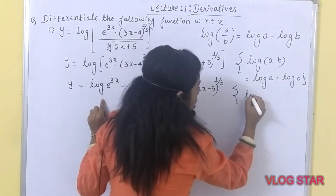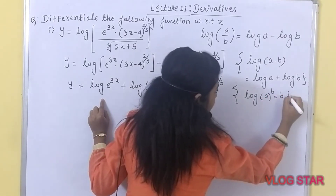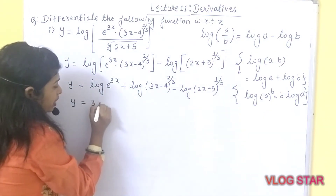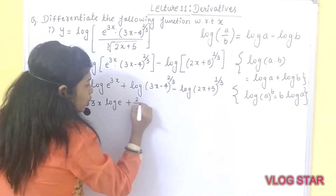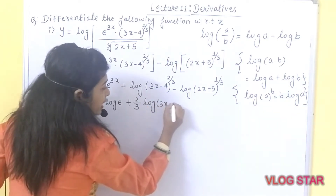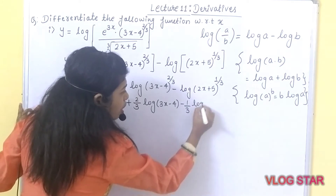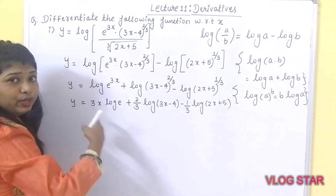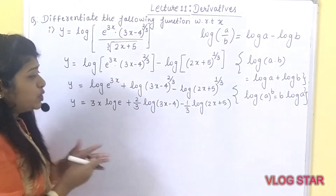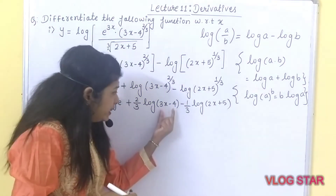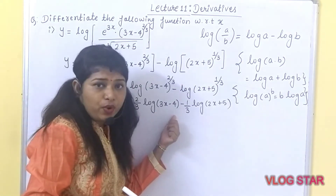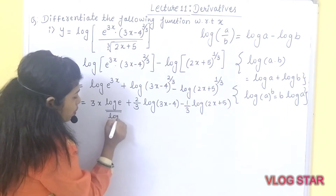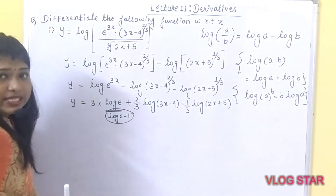You can also use the rule log of a raised to b can be given by b into log a. After applying that formula, the y function becomes 3x·log e plus (2/3)·log(3x minus 4) minus (1/3)·log(2x plus 5). Here, log e is always equal to 1.